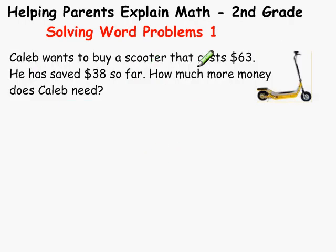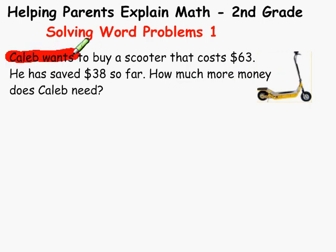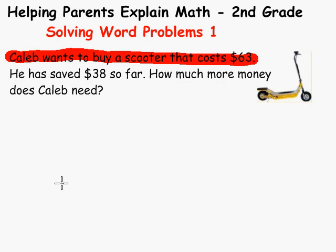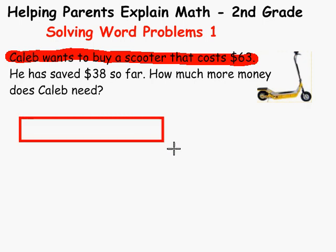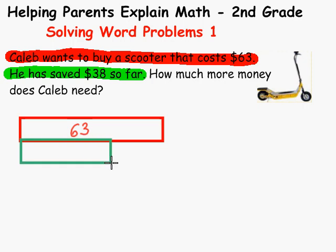Caleb wants to buy a scooter that costs $63. He has saved $38 so far. So that's part of this — we go below and say: part of our 63 is 38.